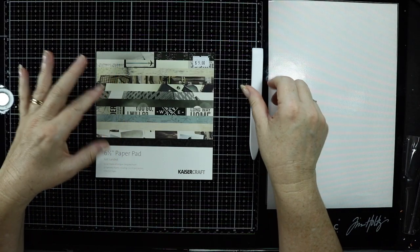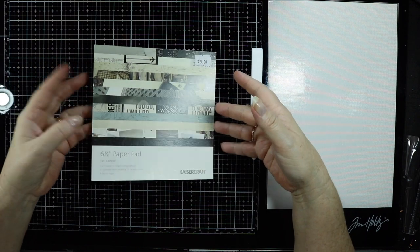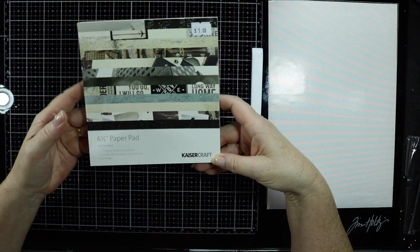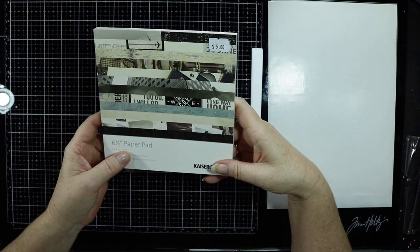G'day everyone, Hallie here. I'm just going to do up some quick masculine cards today and I've got this paper pad here by Kaysercraft and it's called Just Landed, so it's a six and a half inch paper pad.